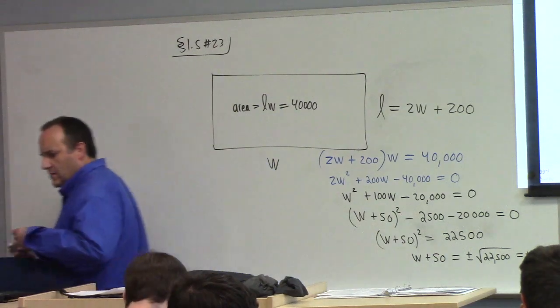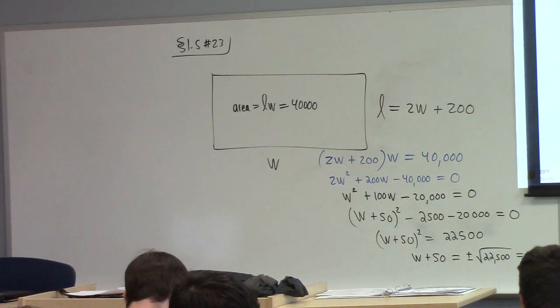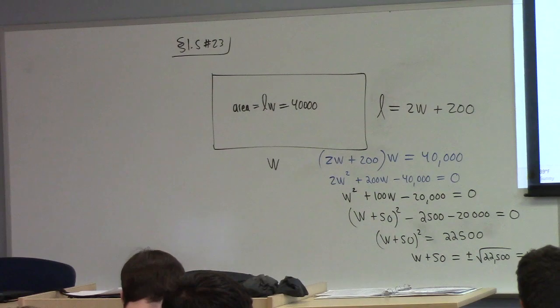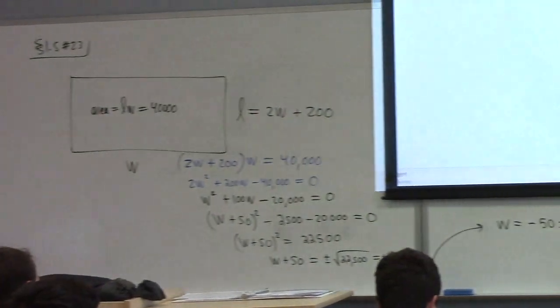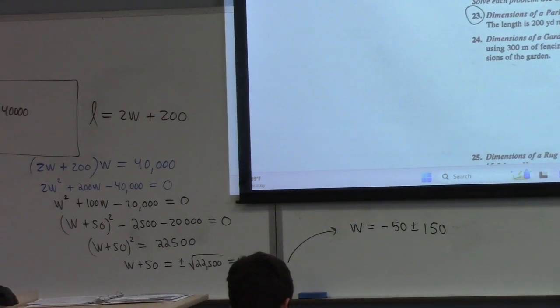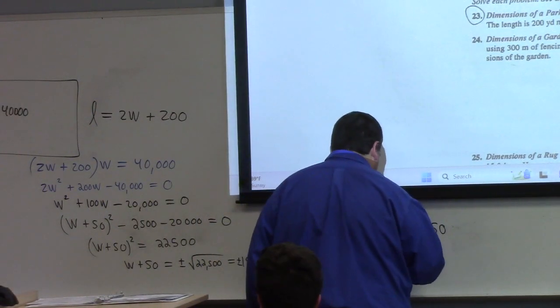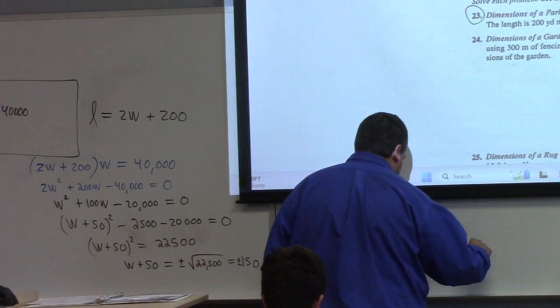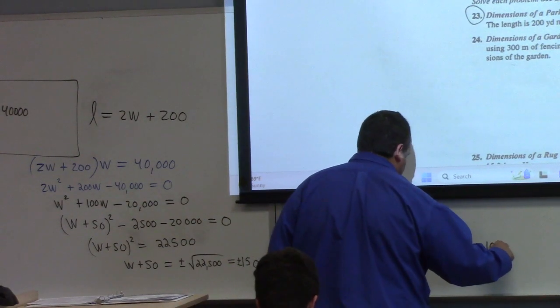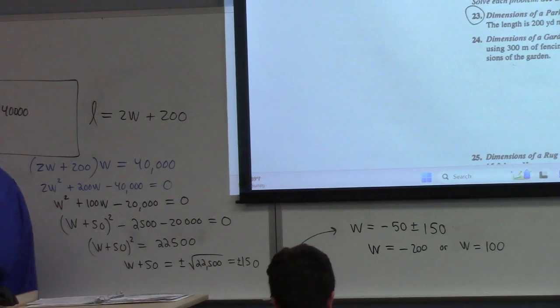So w is equal to minus 50 plus or minus 150. Am I wrong about the square root? If I am, let me know. I'm kind of sick, so don't trust my arithmetic. We got two answers. What are they? w is equal to minus 200, or w is equal to, what's minus 50 plus 150? 100, right?